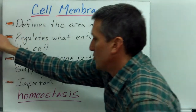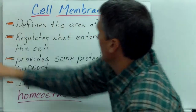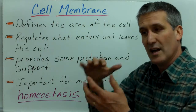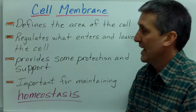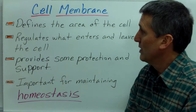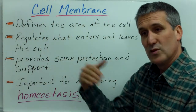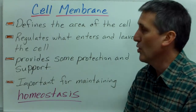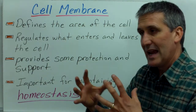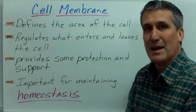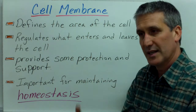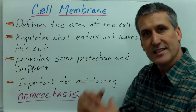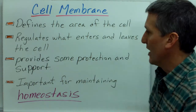The first structure we're going to look at is the cell membrane. You wouldn't have a cell without a cell membrane to define the area of the cell. The cell membrane regulates what enters and leaves the cell and provides some support for the cell. It is the main organelle involved in maintaining homeostasis because it controls what enters and leaves the cell.